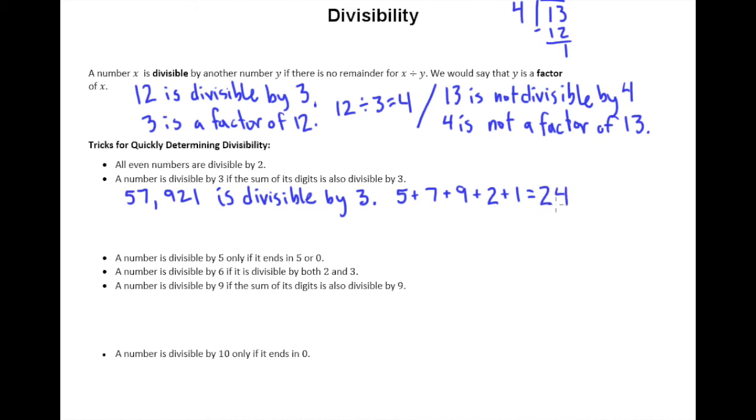Now 24, this is divisible by 3. We know that. And the great thing about this little trick is that if this is divisible by 3, you know the number is divisible by 3.